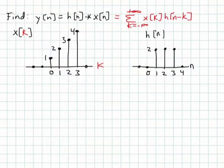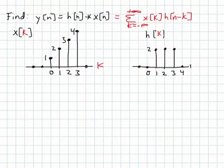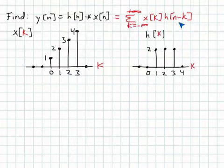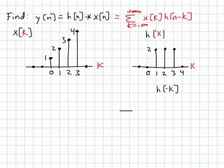We also need to get the sequence h of n minus k. That's going to take a couple of steps. The first step is to rewrite h of n as h of k, making the axis the k axis as well. So now I have sketches of x of k and h of k. But what I really need is h of n minus k, so my next intermediate step is to draw the time-flipped version of h, meaning h of minus k.